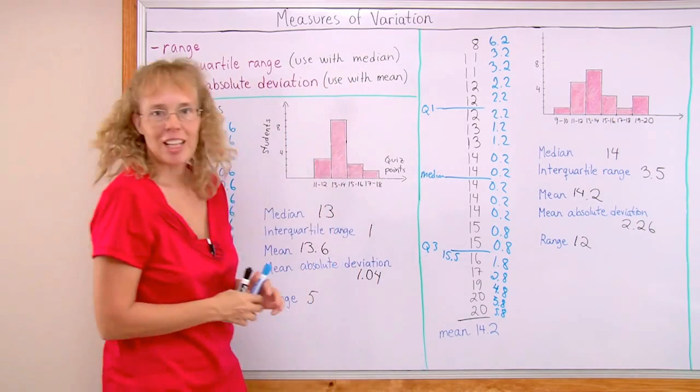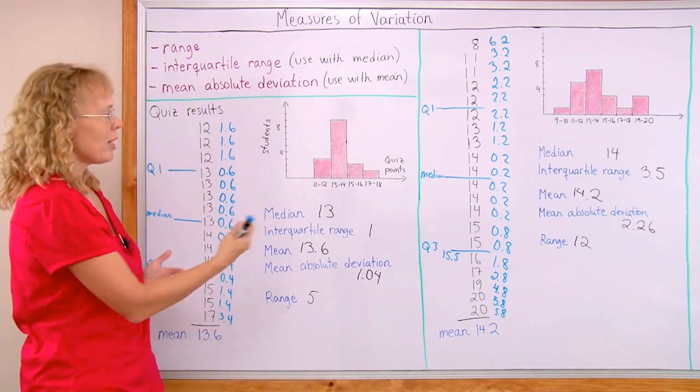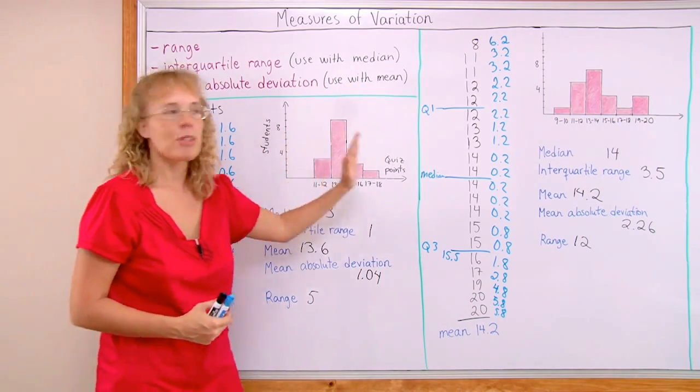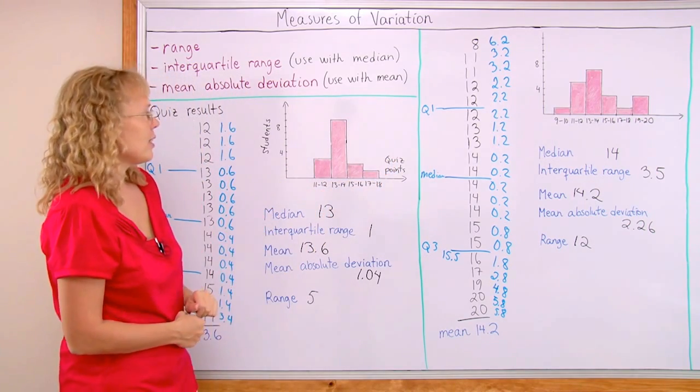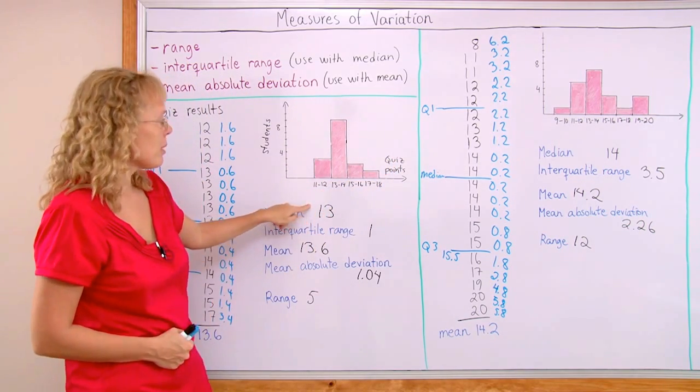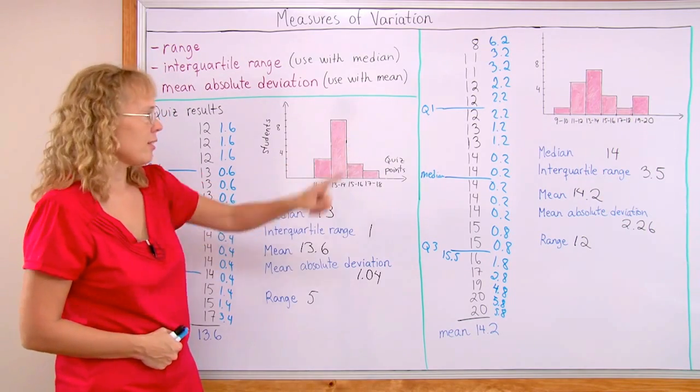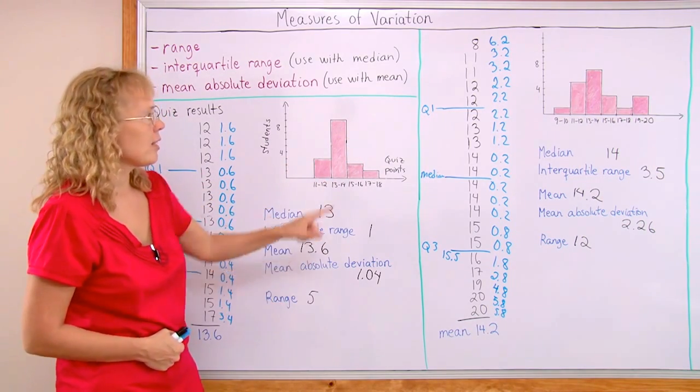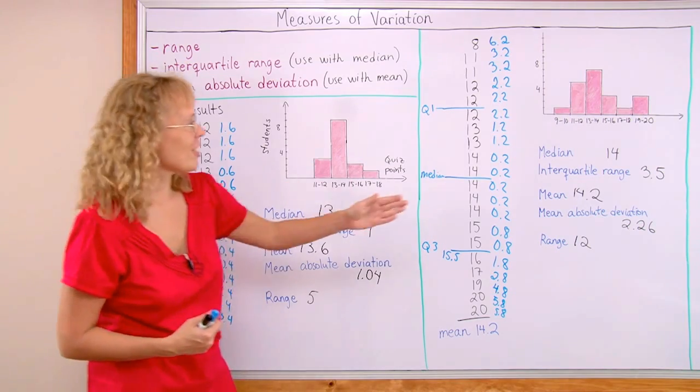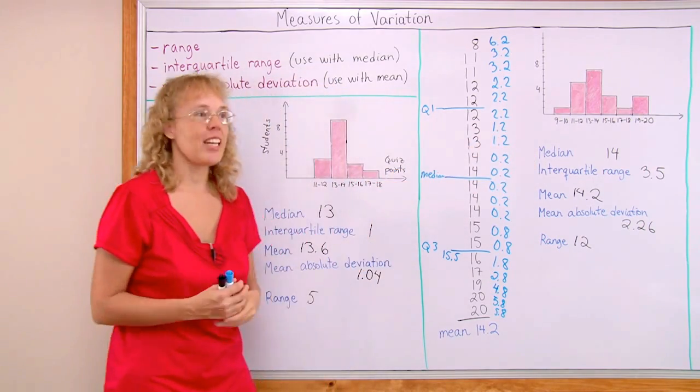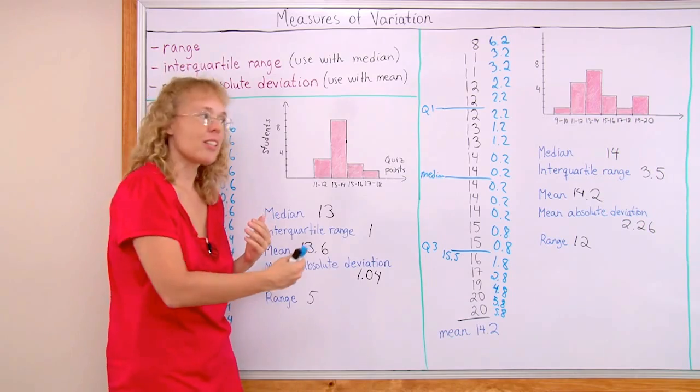Alright. Now our calculations are ready and we can now compare not just the graphs but also the numbers. And in these two groups, if we look at the median, the median is less here than there. The mean also is less here than there. So on average that group did better on the test because the mean and median both are a little bit more.